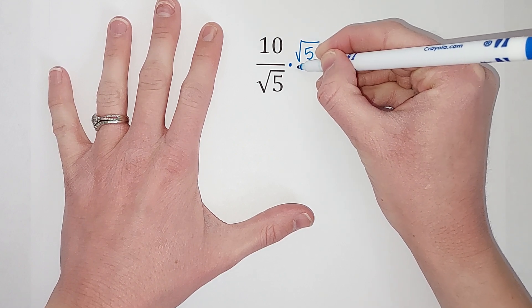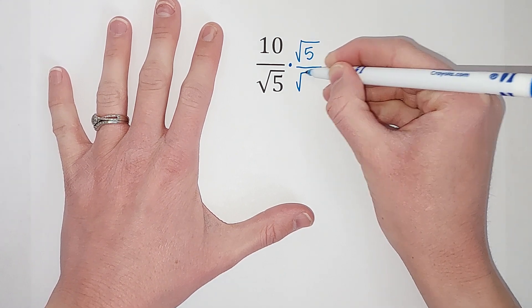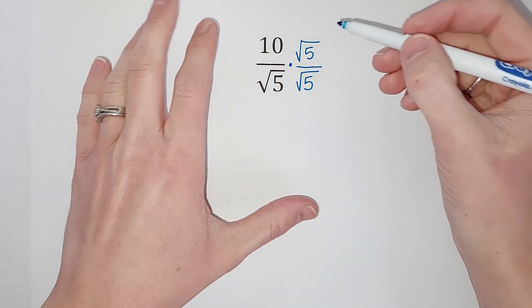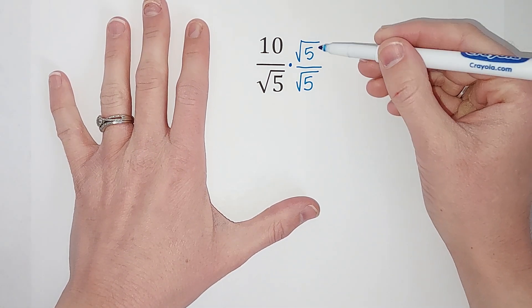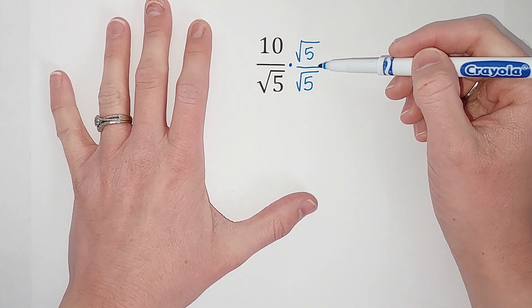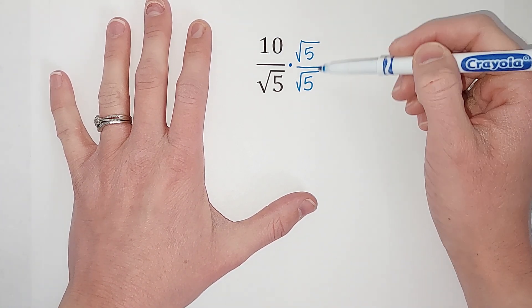Why am I doing this? Actually, first of all, why can I do this? Because the square root of 5 over the square root of 5, anything over itself, is just 1, right? So this is like I'm multiplying by 1, it's just a weird-looking 1.